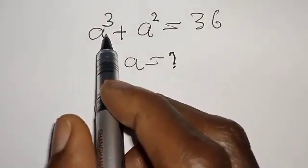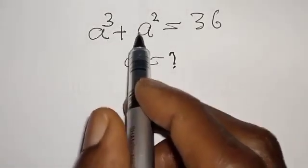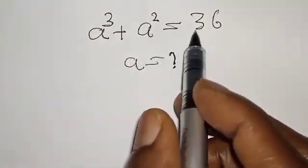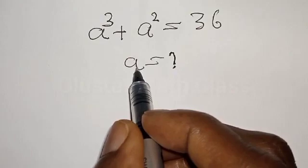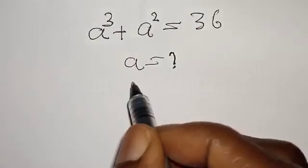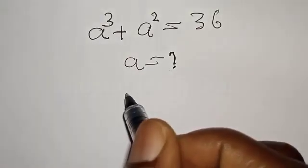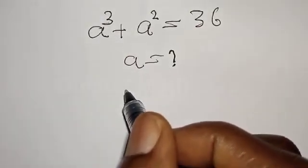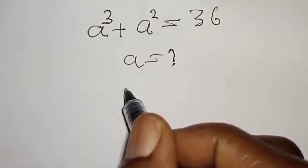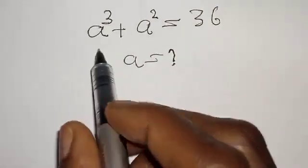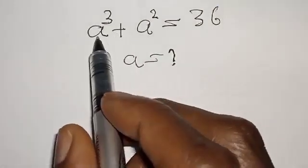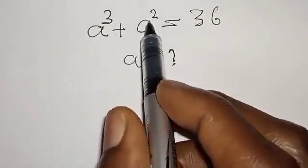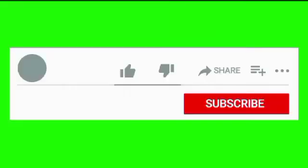A raised to power 3 plus A square is equal to 36. Then A is equal to what? We want to find the value of A. In today's class, we want to find the value of A from this given equation. We have A raised to power 3 plus A square is equal to 36.